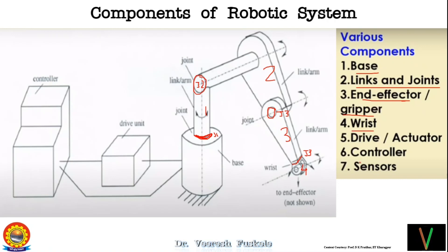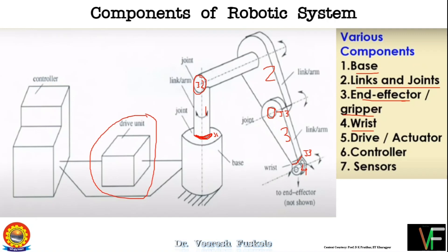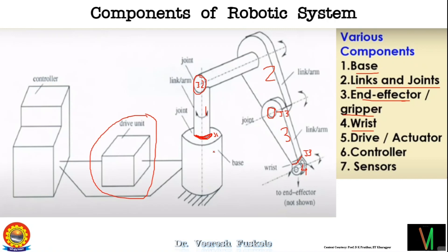Apart from the mechanical linkages — base, links, joints, and end effector — you have a drive unit. We will discuss joint types in more detail shortly. The drive unit actually drives the links and joints so that we can achieve desired motion and the desired position and orientation of the end effector, enabling it to perform the stipulated job.